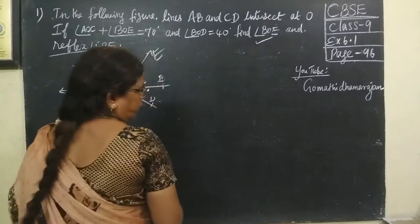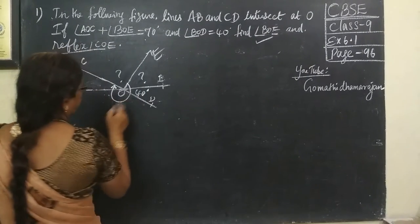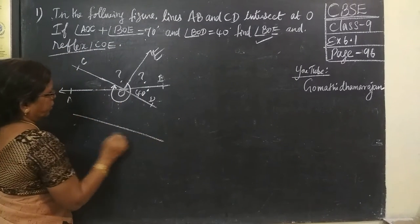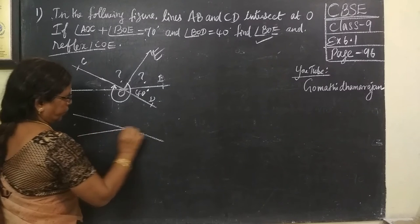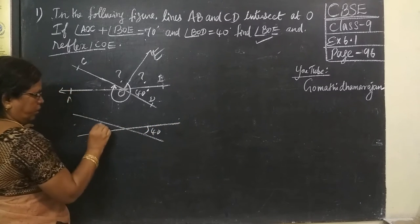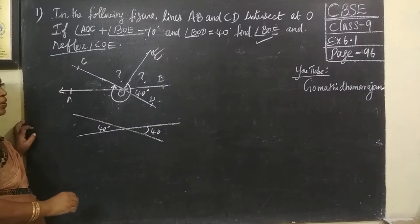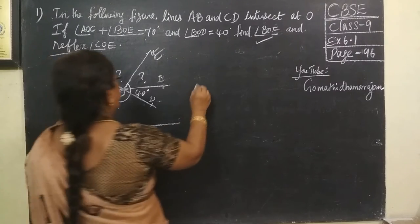First, you take this vertically opposite angle property. Here, you see, even it is 40 degrees. So, definitely this also 40 degrees. So, what is angle?